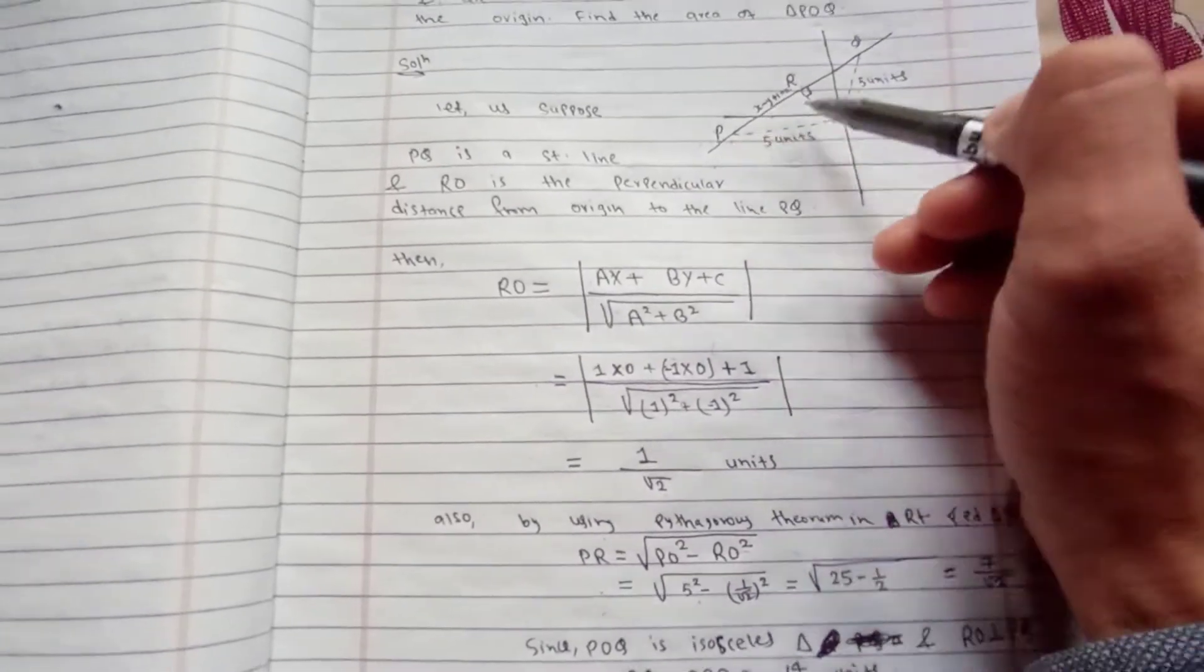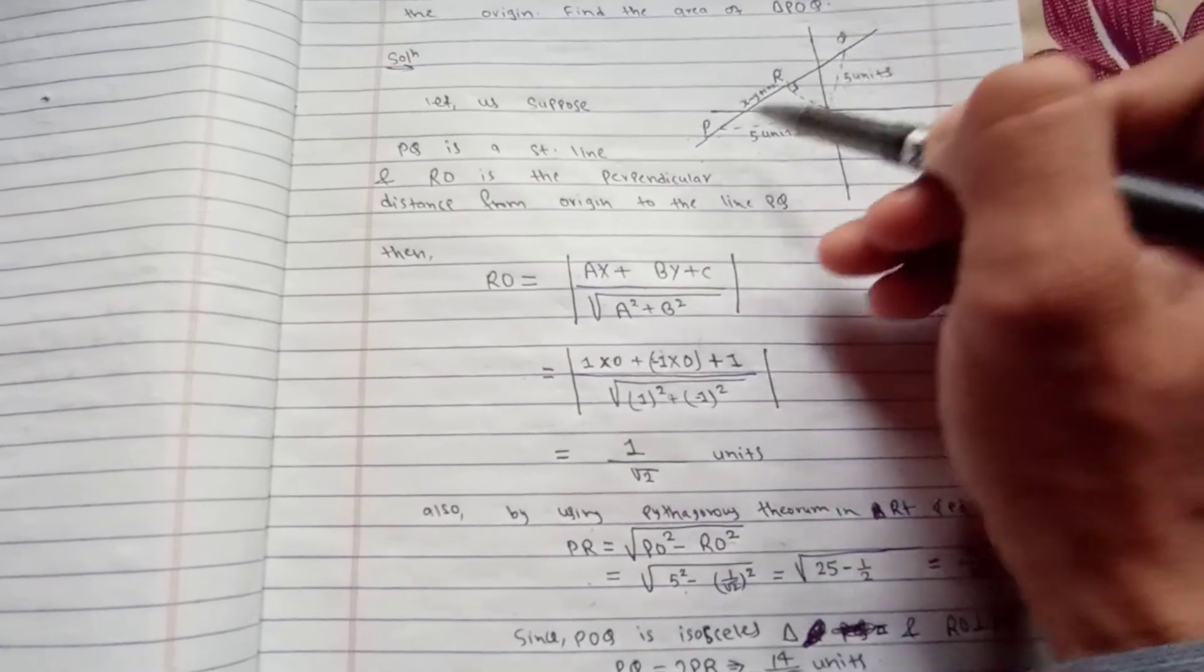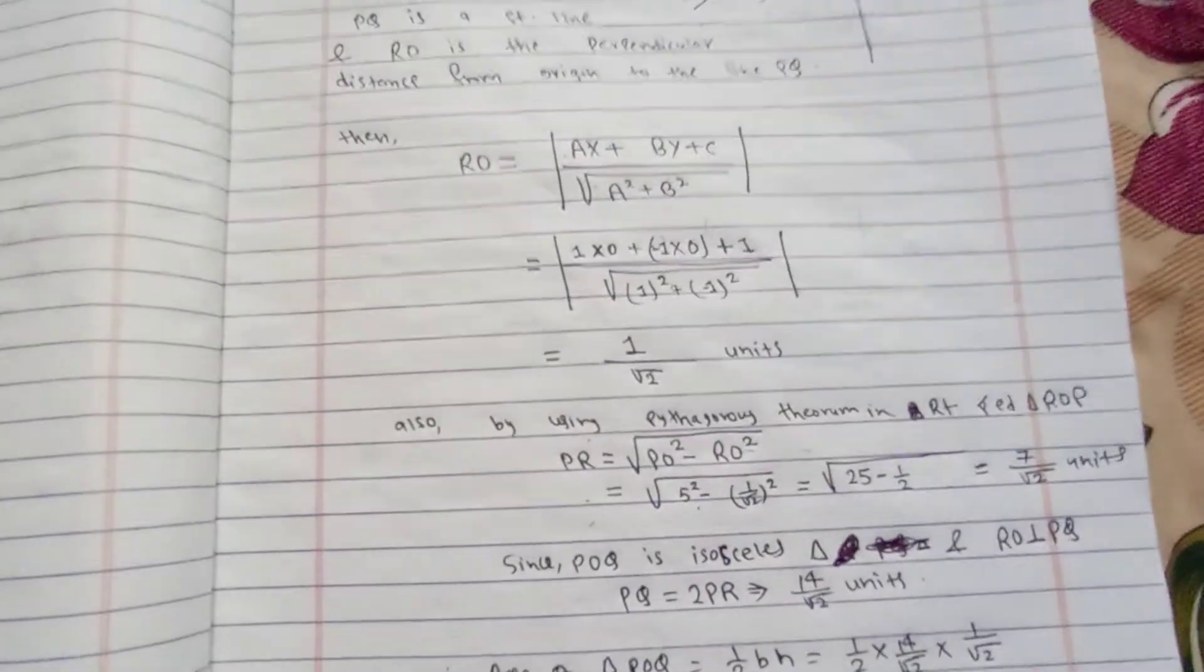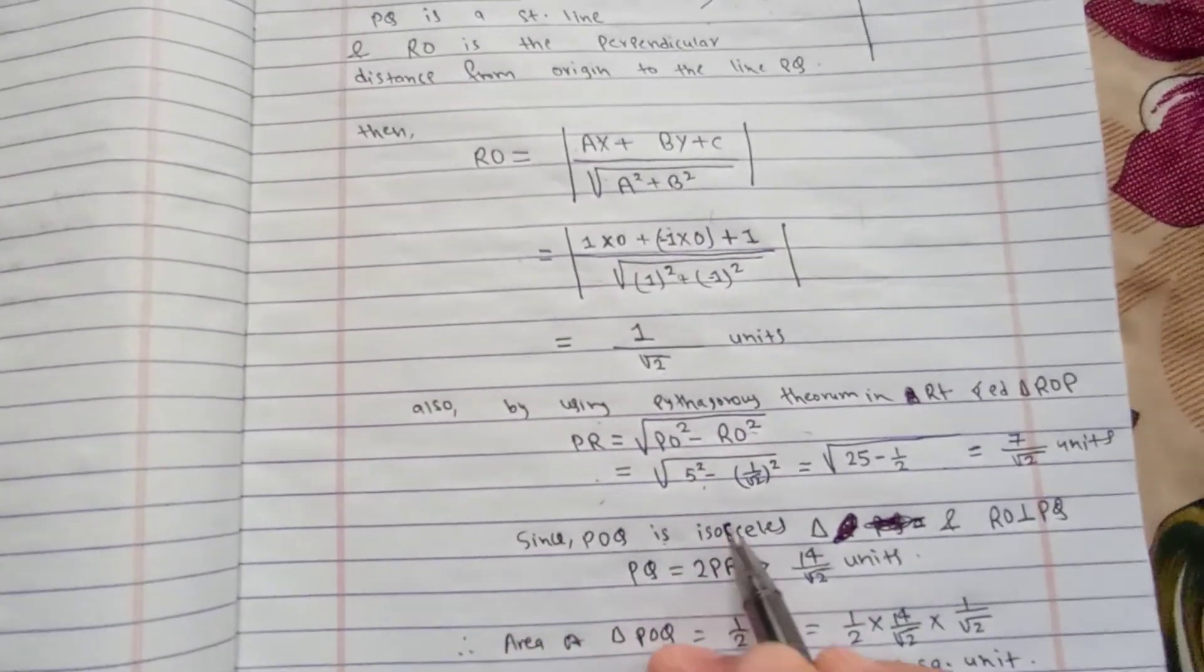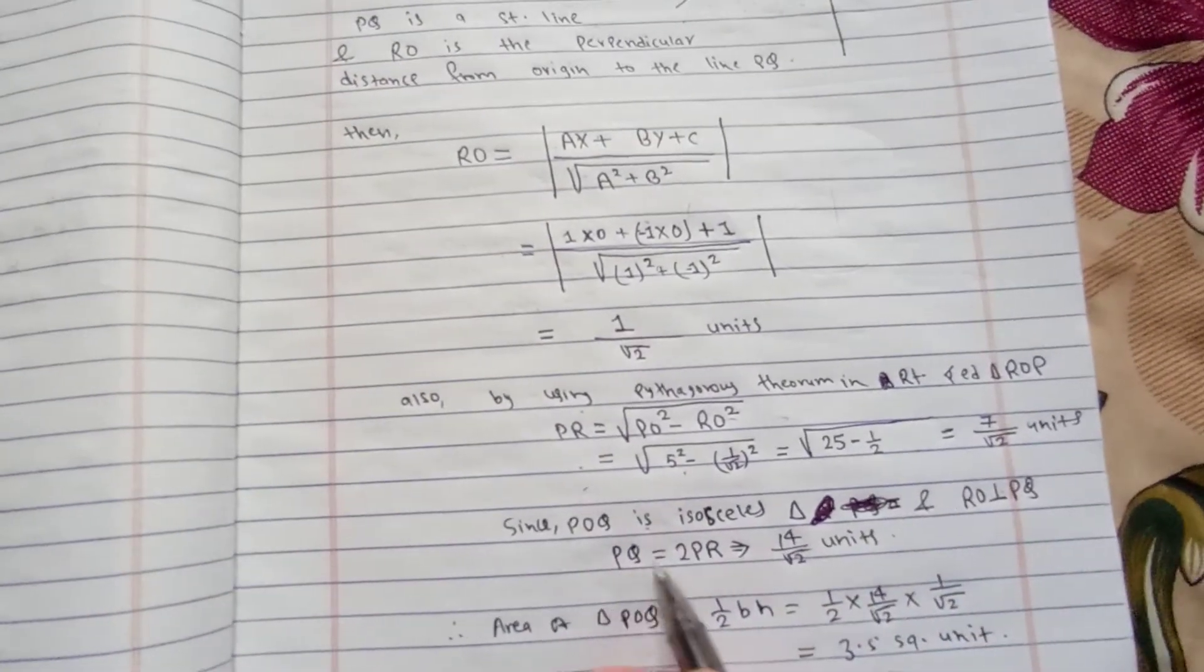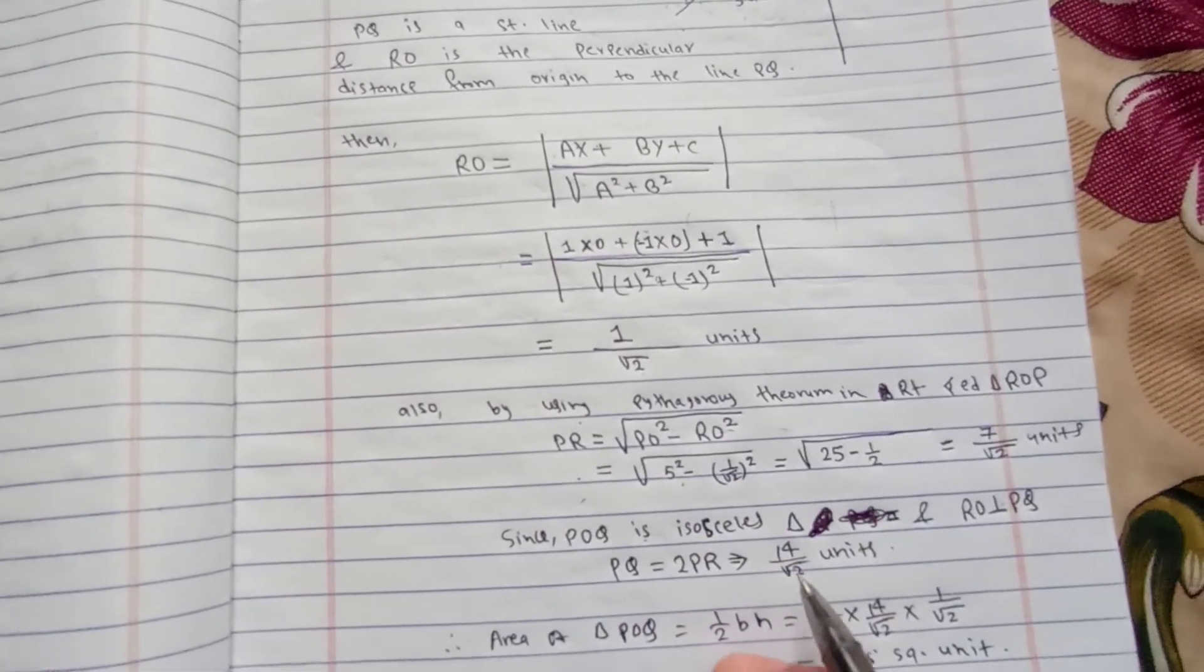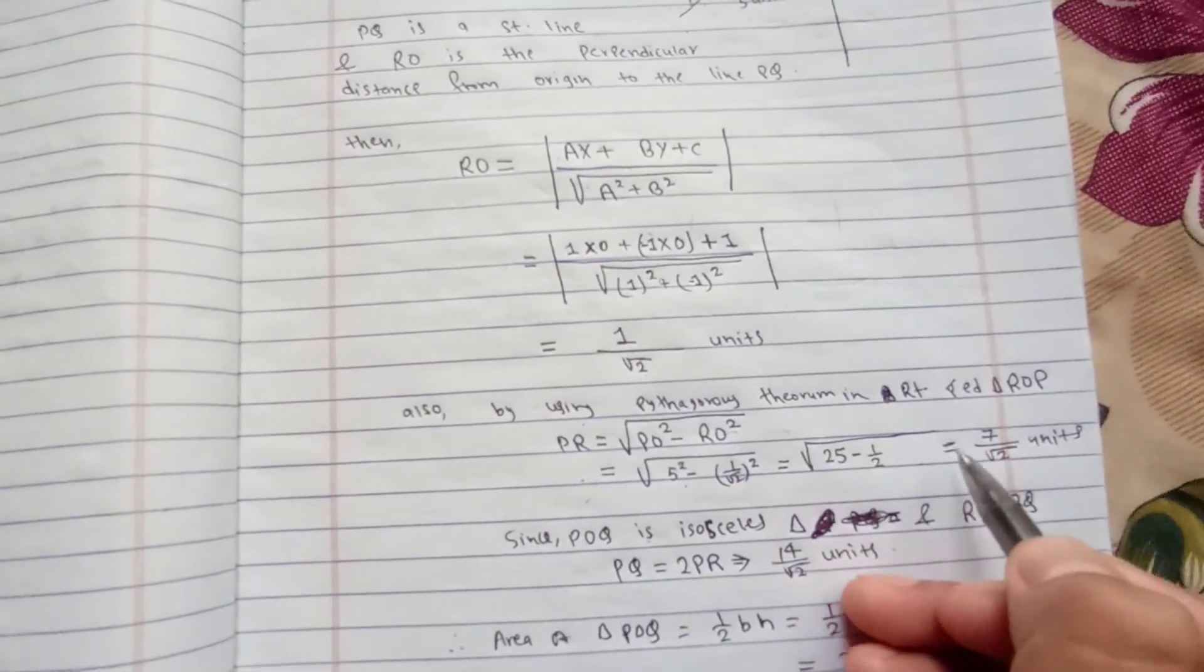Since triangle POQ is isosceles and RO is perpendicular to PQ, we can find the value of PQ by multiplying PR by 2. Therefore PQ equals 2 PR, which equals 14 upon root 2 units.